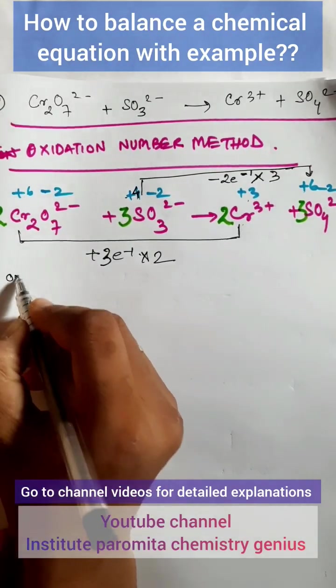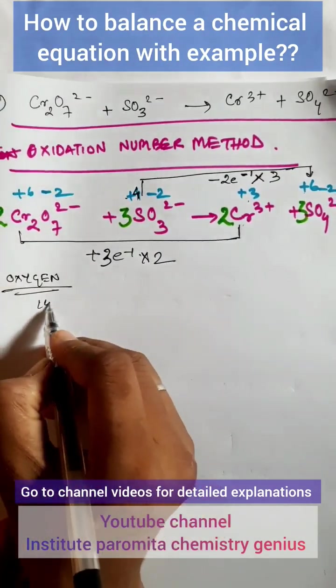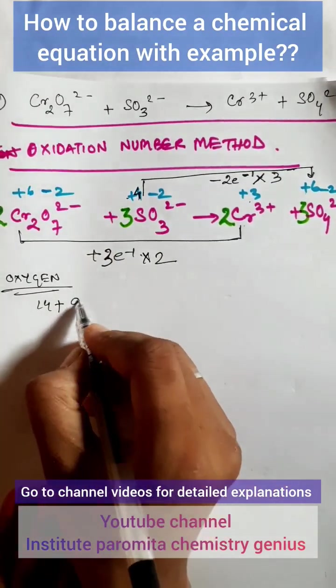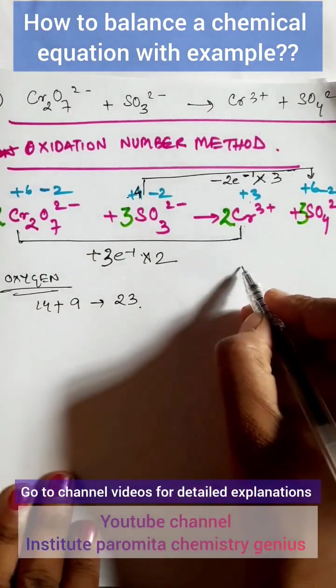The oxygen on both the sides, so your count 7, 2s are 14, 14 plus 3, 3, 3s are 9, 14 plus 9 is 23, and here the oxygen